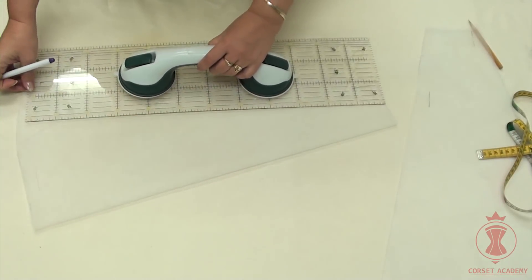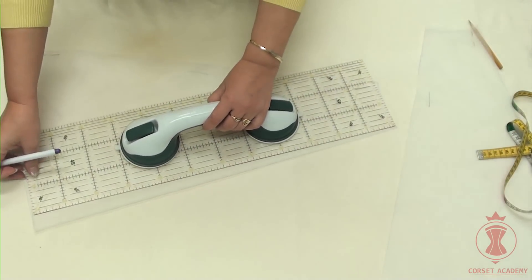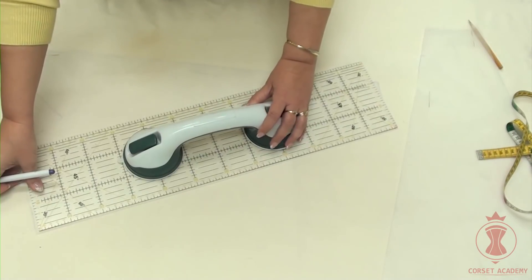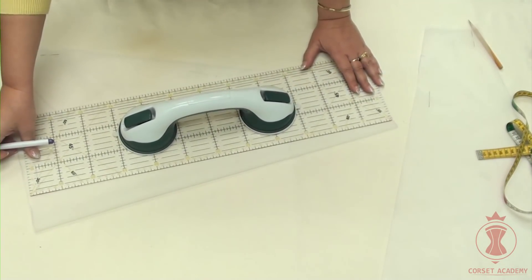The length of the actual petticoat is 120 centimeters, which means it should be 60 centimeters on the mock-up.